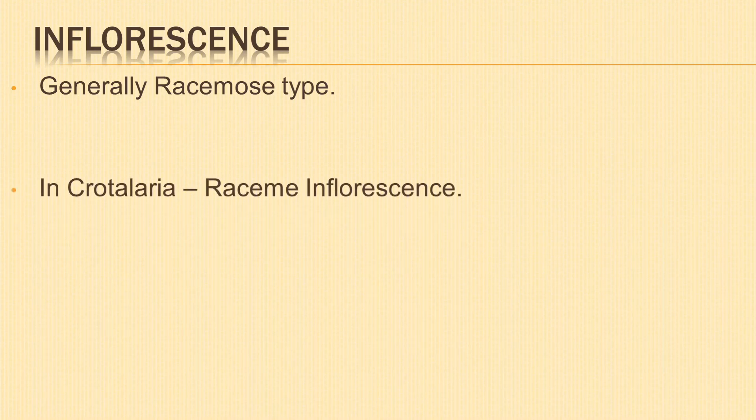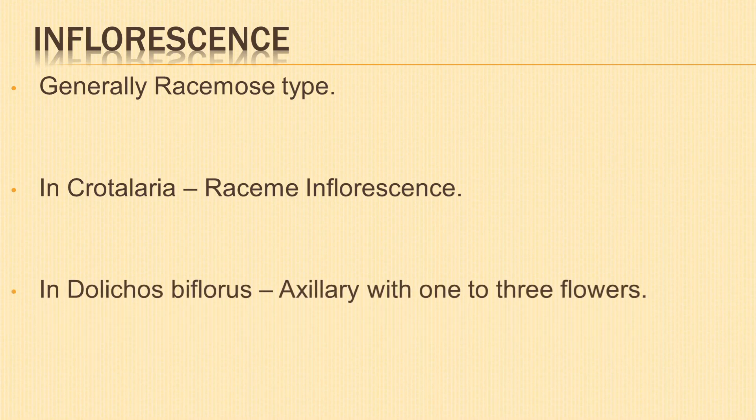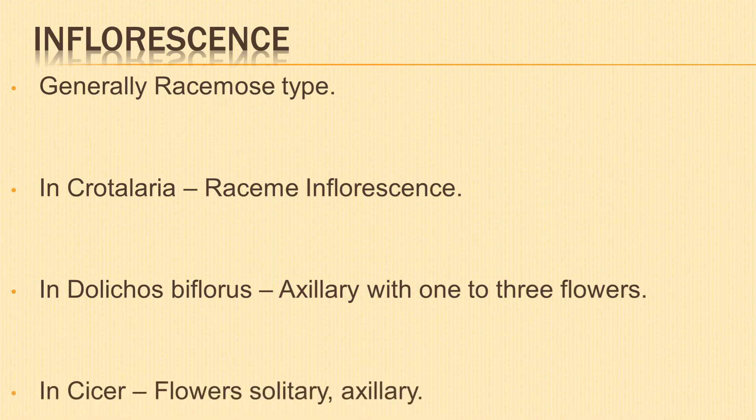The inflorescence is usually of racemose type, but variations may occur. In Cloterea, the flowers are arranged in racemes. In Dolicos biflorus, the inflorescence is axillary with one to three flowers in the axils of leaves. In Scissor, the flowers are solitary and axillary.